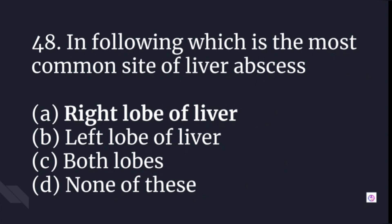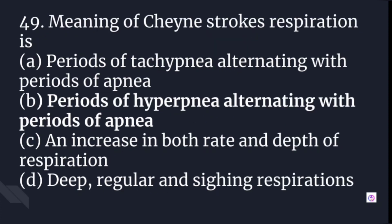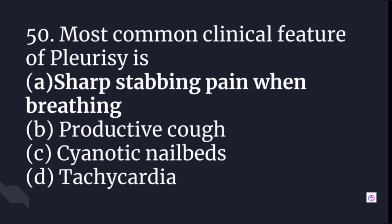Poor personal hygiene is not a predisposing factor for laryngeal cancer. The most common site of liver abscess is the right lobe of the liver. Cheyne-Stokes respiration refers to periods of hyperpnea alternating with periods of apnea. The most common clinical feature of pleurisy is sharp, stabbing pain when breathing — the answer is option A.